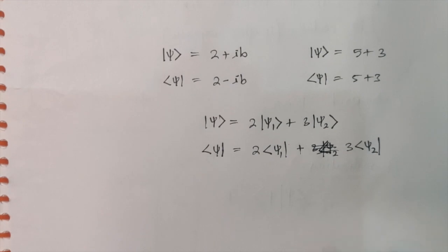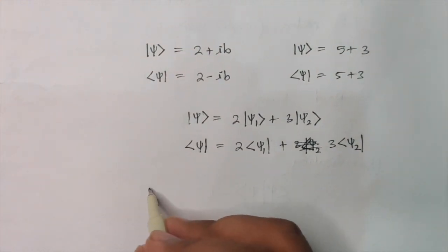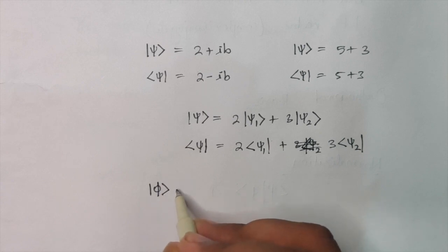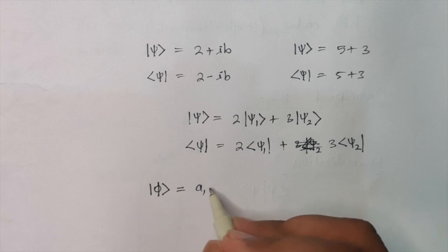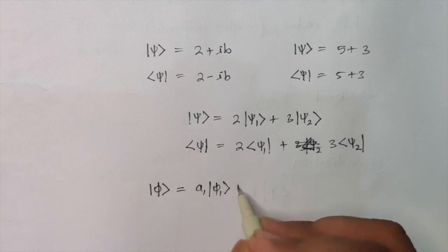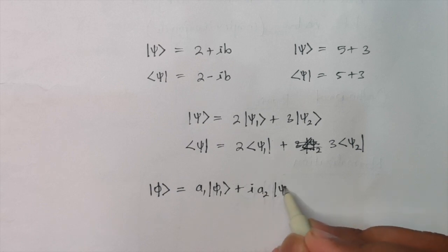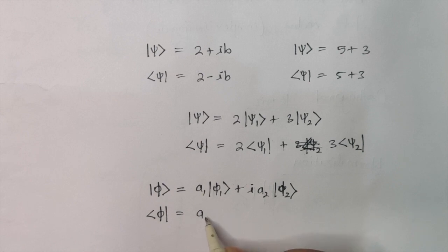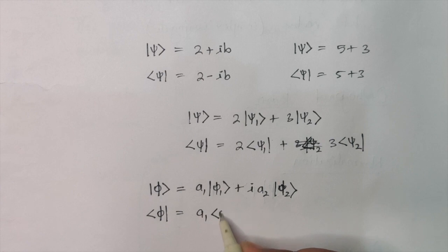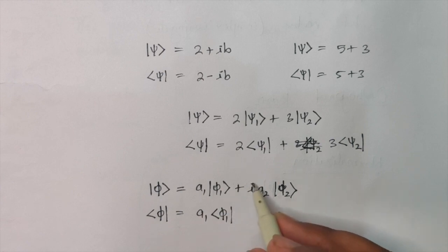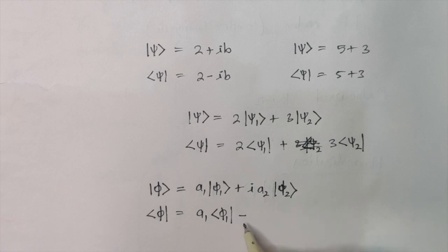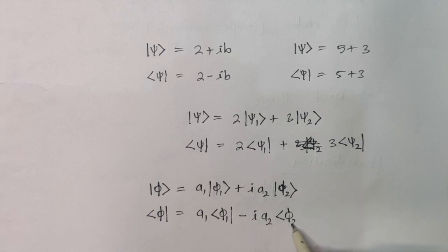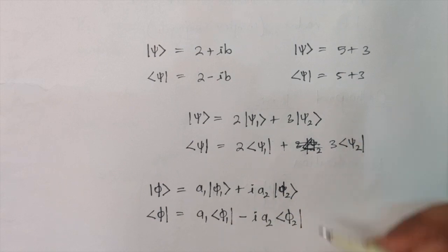Let's say a particular ket vector Phi is given like: a1 times ket-Phi-1 plus i·a2 times ket-Phi-2. So the corresponding bra vector of Phi will be: a1 times bra-Phi-1, and since i is the complex part, you change its sign — it will become minus i — and then a2 times bra-Phi-2. So this is how we convert ket vectors into bra vectors.